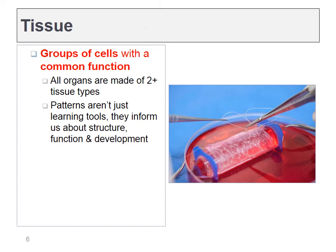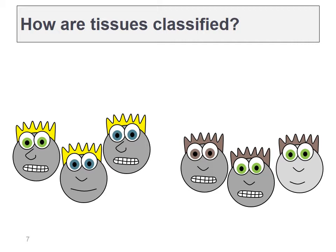A tissue is a group of cells, all the same cell type, working together to serve a common function. We'll be working our way up to discussing organs, which are made of at least two different tissue types. Once we learn how these tissues behave, we won't have to relearn it — we'll be seeing the same patterns throughout the year.